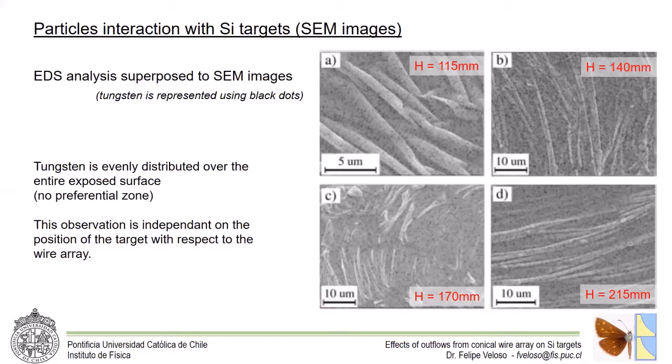Here you can see images at 11, 14, 17, and 21 centimeters above the top electrode, and in all of them we can see an evenly distributed tungsten over the surface.